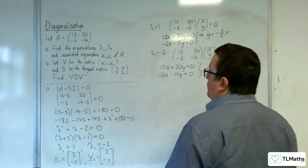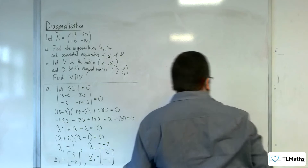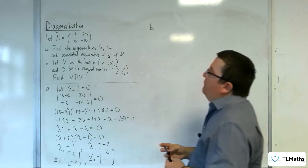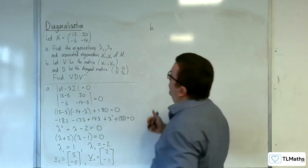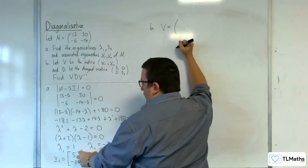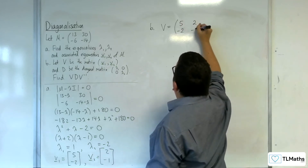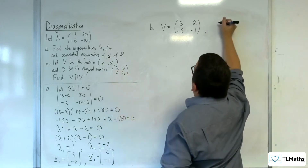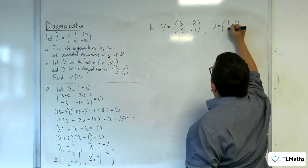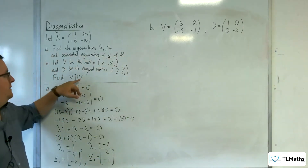That's part A. For part B, let V be the matrix formed by placing v1 and v2 side by side, so V is 5, 2, minus 2, minus 1. And D is the diagonal matrix made up of the two eigenvalues: 1, 0, 0, minus 2. We now need to find V D V inverse.